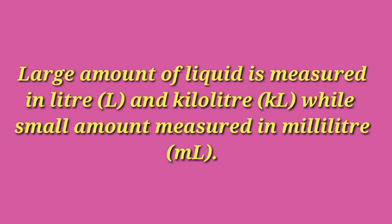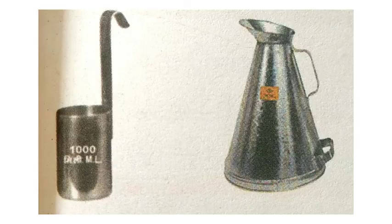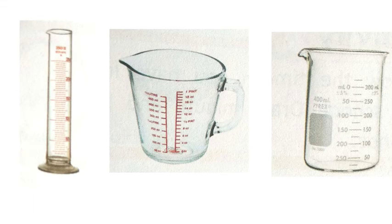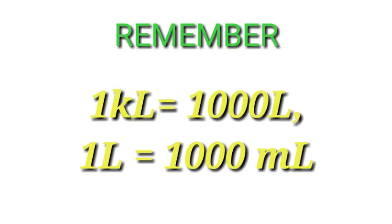Now we will see the instruments used to measure capacity. There are certain vessels that help measure liquids. The first is the measuring cylinder, then there is a measuring jug, and a measuring beaker — all these are present in our science lab. Remember: one kiloliter is equal to one thousand liters, and one liter is equal to one thousand milliliters. Keep these conversions in mind.